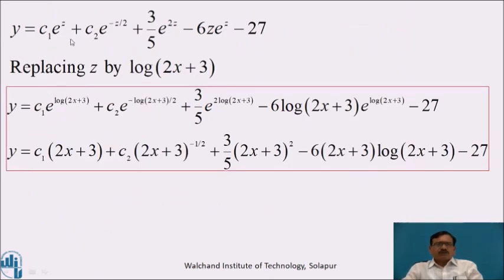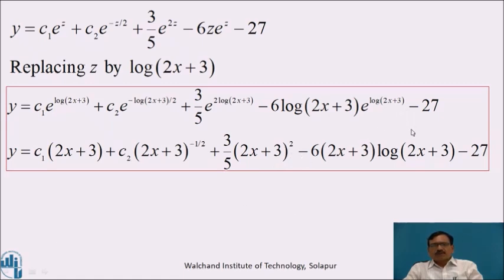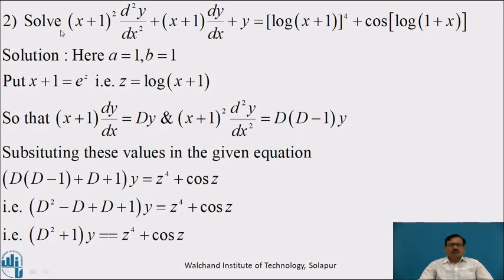The general solution is y = CF + PI = c₁e^z + c₂e^{-z/2} + 3/5·e^{2z} - 6z·e^z - 27. Replacing z by log(2x+3): y = c₁(2x+3) + c₂(2x+3)^{-1/2} + 3/5·(2x+3)² - 6·log(2x+3)·(2x+3) - 27.